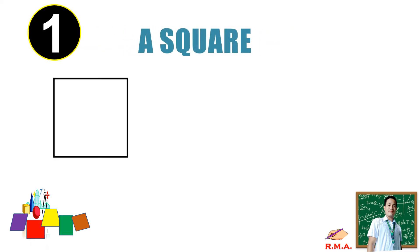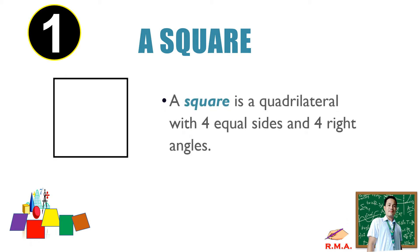Let's start with the first type: a square. A square is a quadrilateral with four equal sides and four right angles.